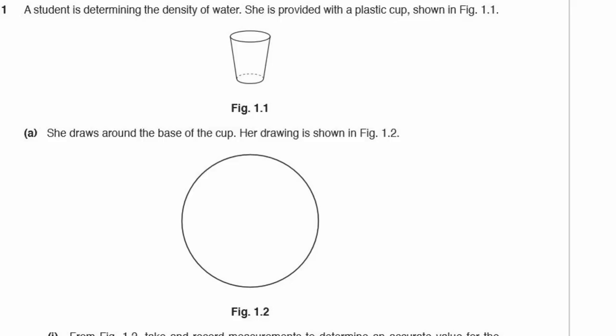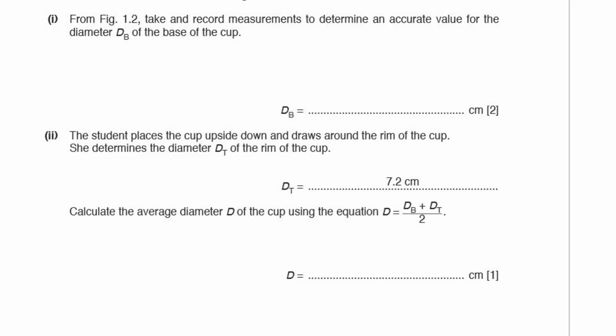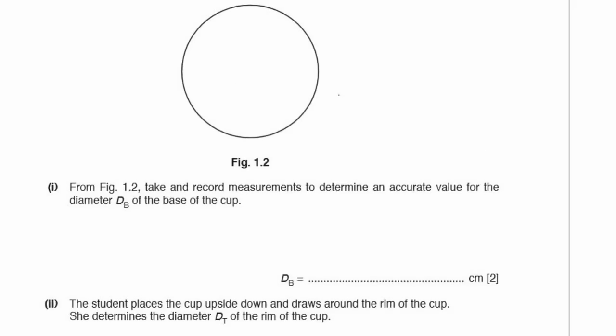Question number 1. A student is determining the density of water. She is provided with a plastic cup, shown in figure 1.1. She draws around the base of the cup. Her drawing is shown in figure 1.2. From figure 1.2, take and record measurements to determine an accurate value for the diameter dB of the base of the cup. So let's look at that cup. For the diameter, we're going to want to measure across the full width of that circle there. That's the diameter dB.